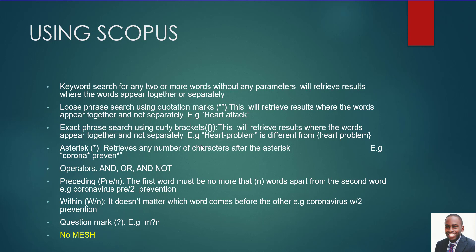The next symbol to know is truncation using an asterisk. For example, if I type 'corona*' and 'prevent*', it will give me all articles that have words like coronavirus, coronation, and also prevention, preventing. The asterisk means any number of characters following it. When you put a quotation mark around truncated terms, you tell the database they should appear together. So using asterisk at the end of part of a word retrieves articles with all the related word endings.